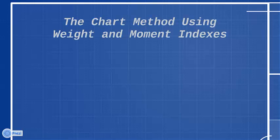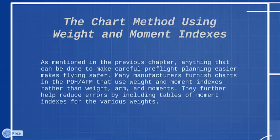The chart method using weight and moment indexes: As mentioned in the previous chapter, anything that can be done to make careful pre-flight planning easier makes flying safer. Many manufacturers furnish charts in the POH or AFM that use weight and moment indexes rather than weight, arm, and moments. They further help reduce errors by including tables of moment indexes for various weights.